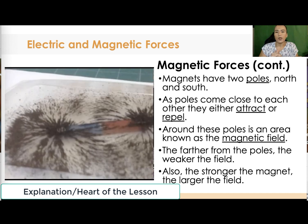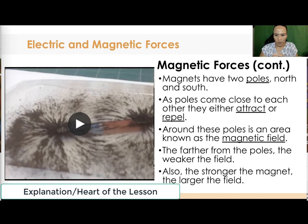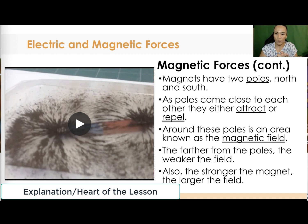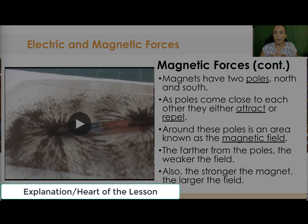This short video will show you how magnetic forces or magnetic fields happen. We can't see magnetism unless we represent it in a demo. Magnets have two poles, north and south. In this case we have a bar magnet — as poles come close to each other they either attract or repel.